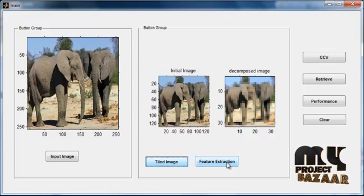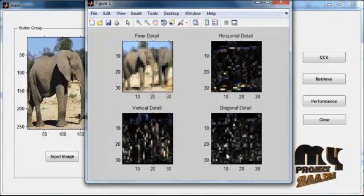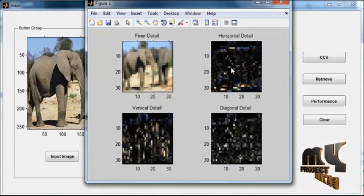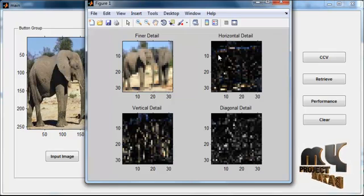Then click the button feature extraction. After clicking the button feature extraction, the feature is extracted from the image. Then the extracted feature image will be shown in the subplots. The first one is finer detail, horizontal detail, vertical detail and diagonal detail.